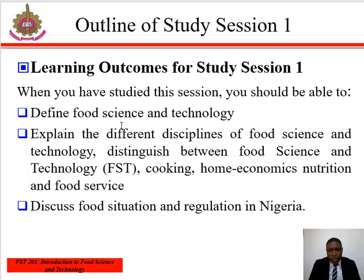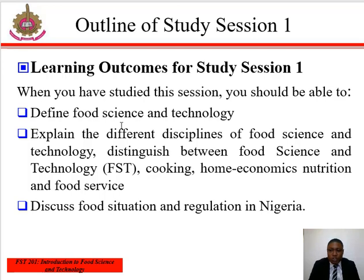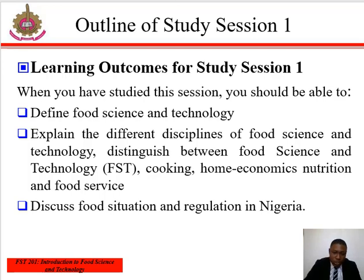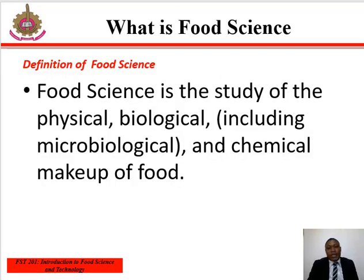Outline of the study. After you have studied this session, you should be able to define food science and technology in your own terms, explain the different disciplines of food science and technology, distinguish between food science and technology, cooking, home economics, nutrition and food service, and also discuss food situation and regulation in Nigeria.